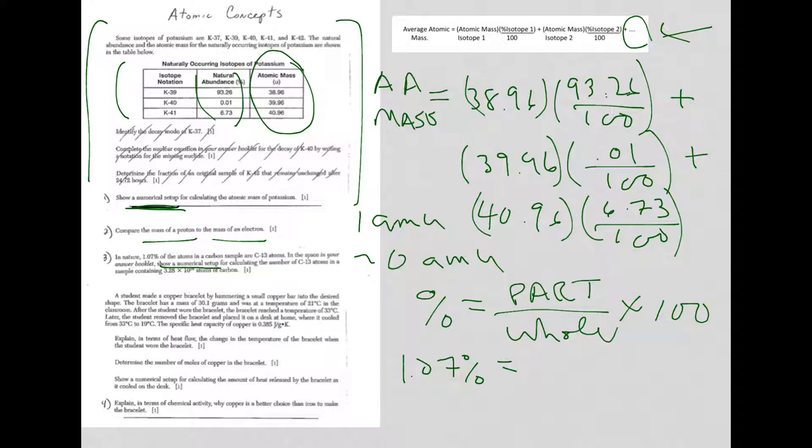So 1.07% is equal to our carbon-13 atoms over the whole thing, which is 3.28 times 10 to the 24th. And don't forget, it's percent, so it's times 100. So there's a correct setup.